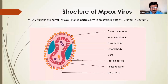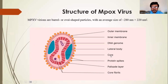The mpox virus structure: mpox virus particles are barrel- or oval-shaped with an average size of approximately 200–280 nm in length and 220 nm in diameter. The structure consists of an outer membrane, inner membrane, DNA, lateral bodies, core, protein spikes, the palisade layer, and core fibers.